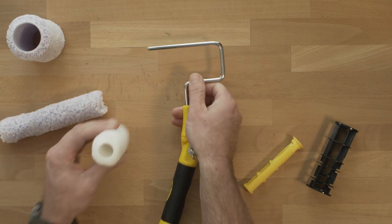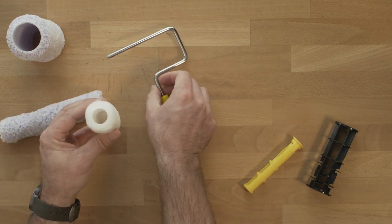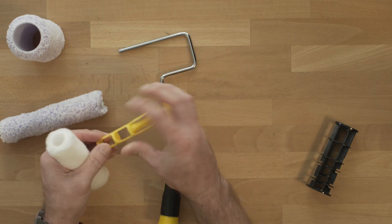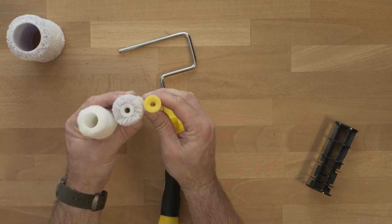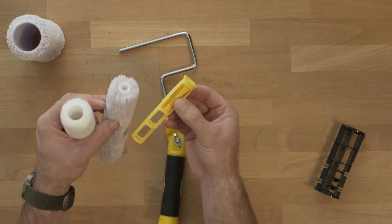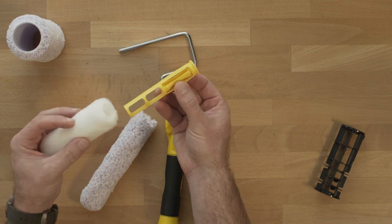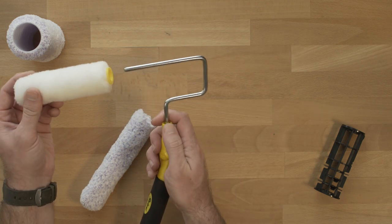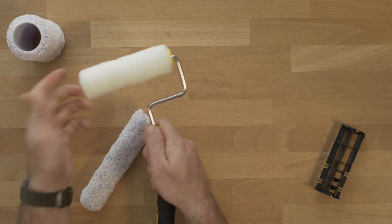Jumbo minis, which have the three-quarter inch core here, would go on this adapter that you see here. This adapter mimics the inside of the mini roller. All we need to do is slide this adapter onto our mini jumbo, and now this can slide right onto our frame.